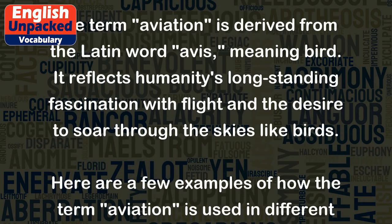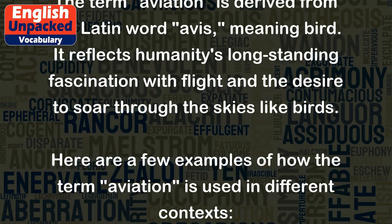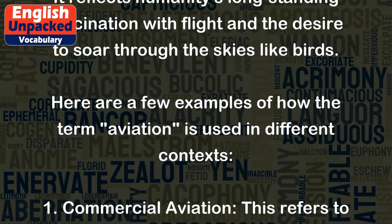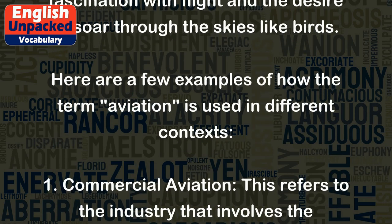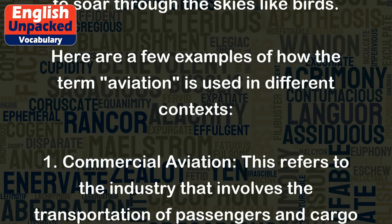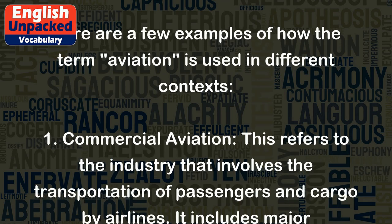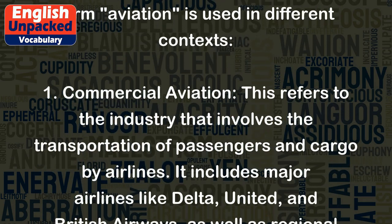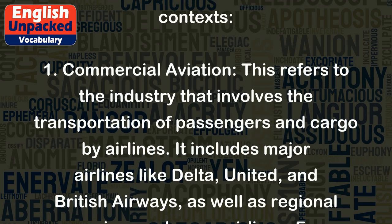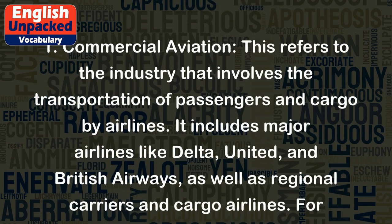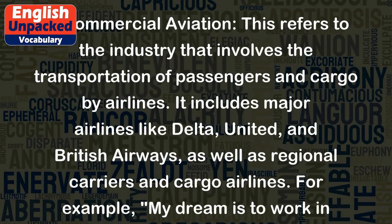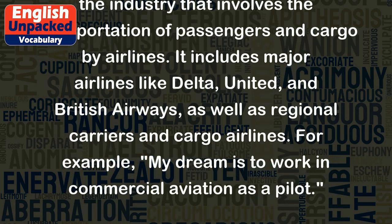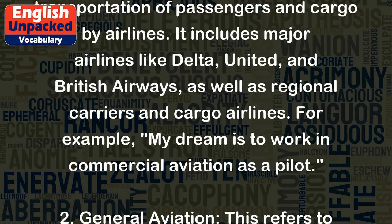Here are a few examples of how the term aviation is used in different contexts. 1. Commercial Aviation: This refers to the industry that involves the transportation of passengers and cargo by airlines. It includes major airlines like Delta, United, and British Airways, as well as regional carriers and cargo airlines. For example, my dream is to work in commercial aviation as a pilot.